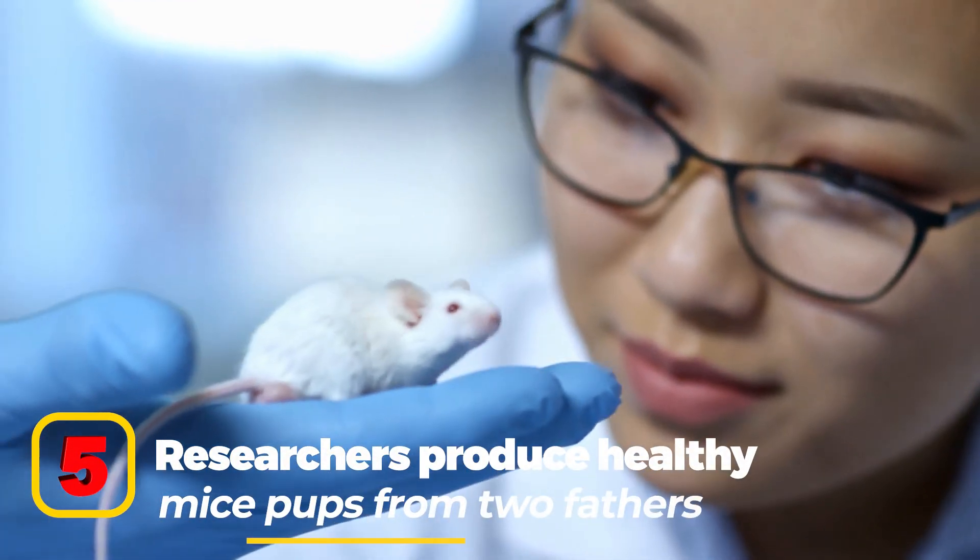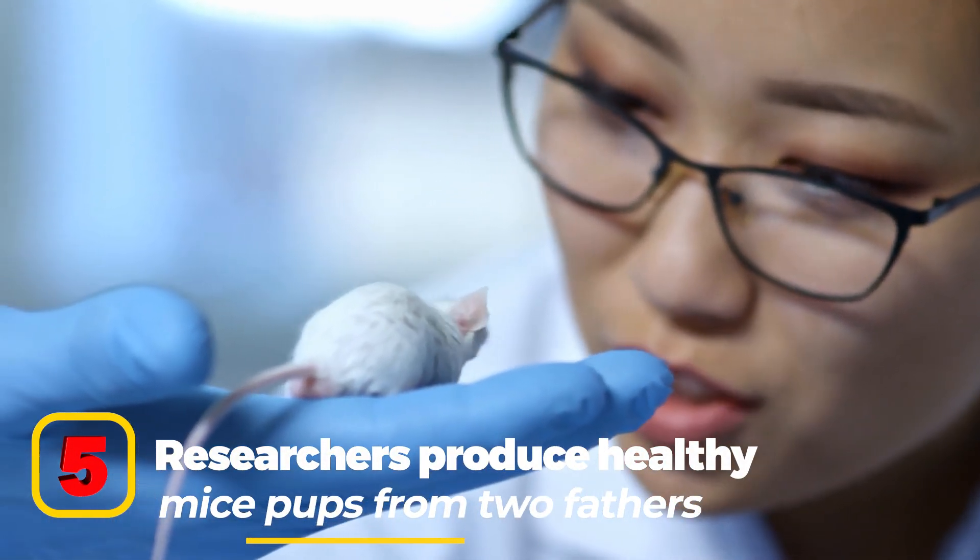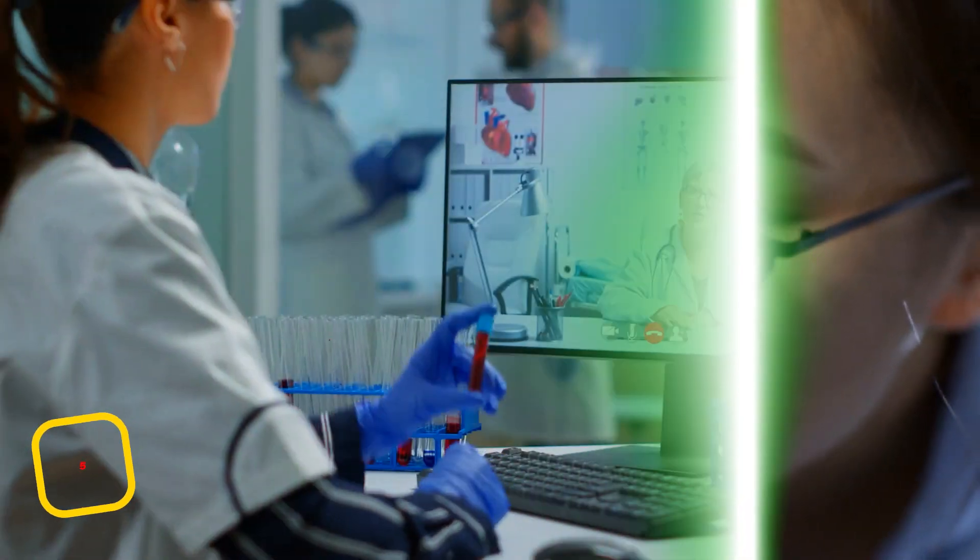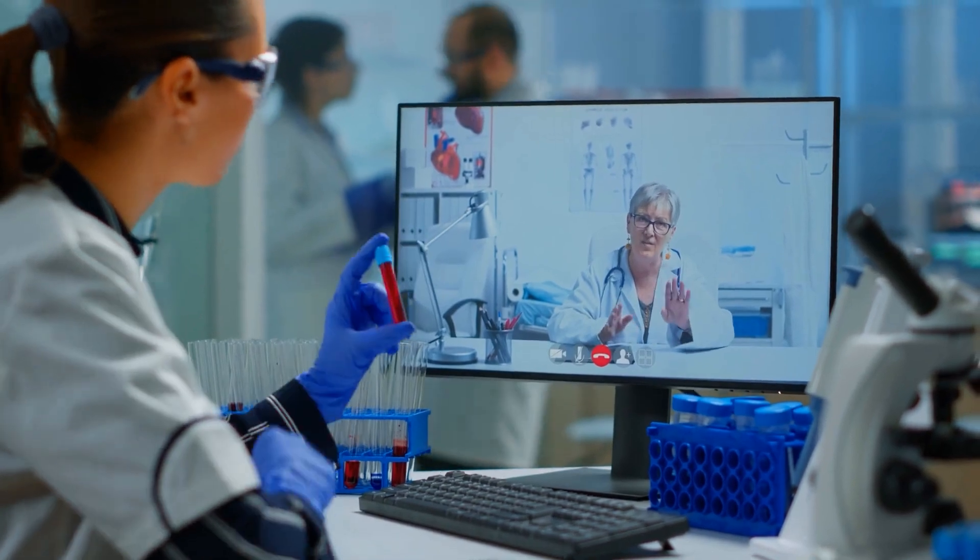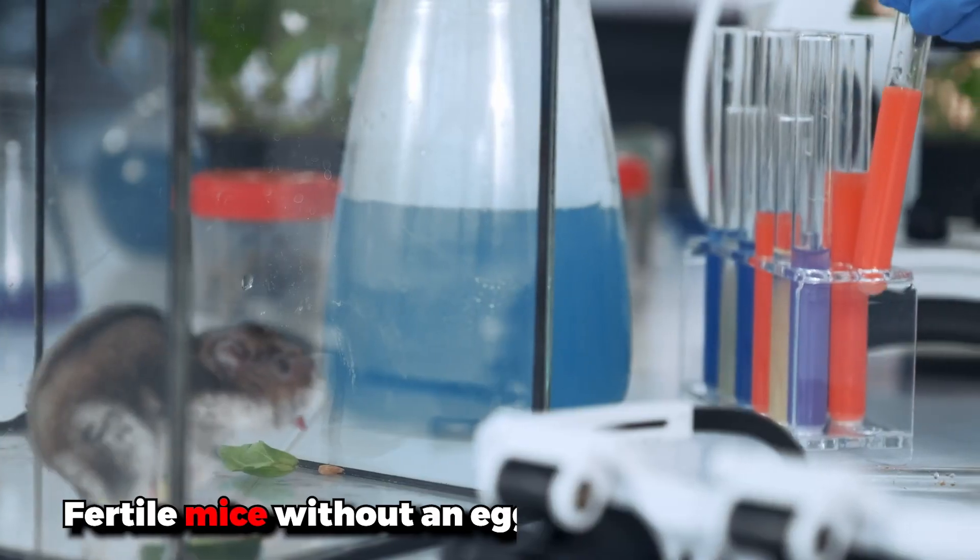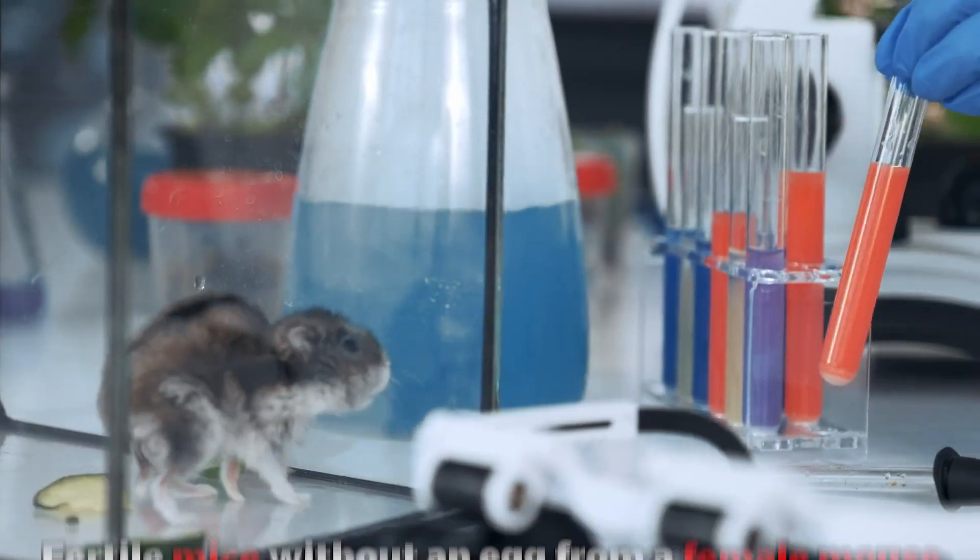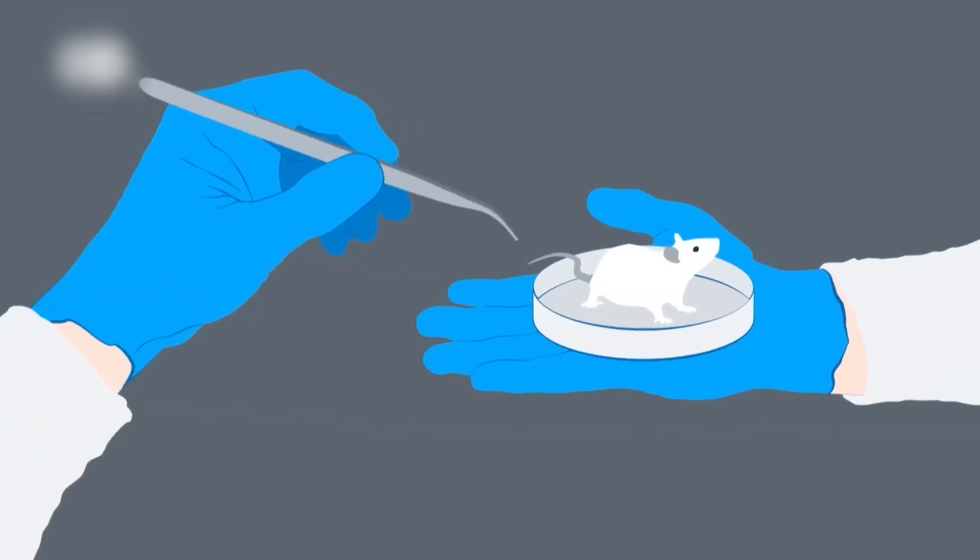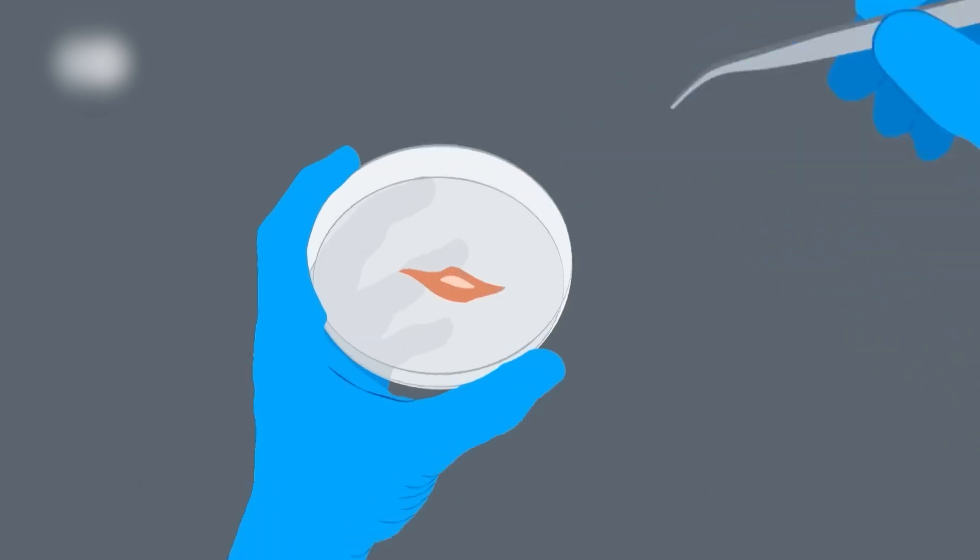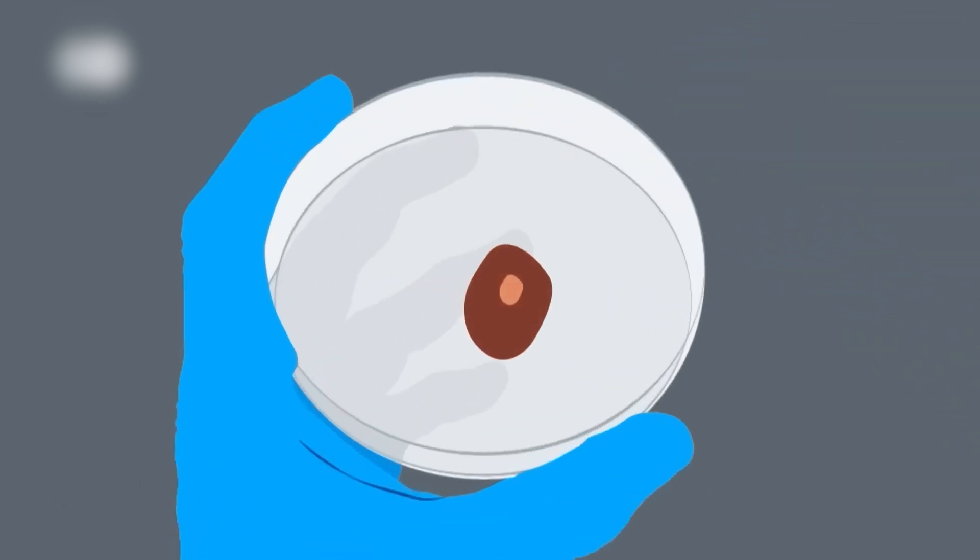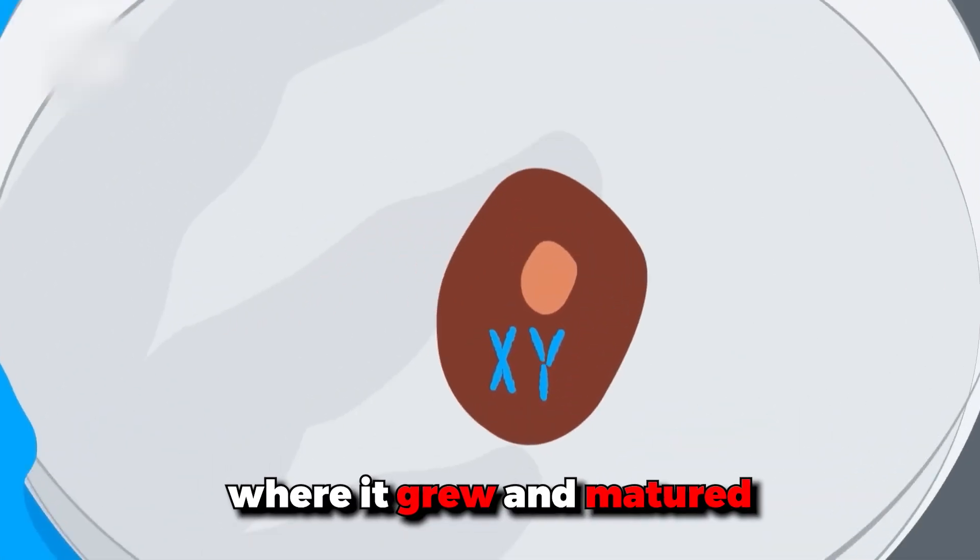Number 5: Researchers produce healthy mice pups from two fathers. Yes, you read that right. Researchers from Japan presented evidence at a scientific conference that it is possible to produce healthy, fertile mice without an egg from a female mouse. First, eggs were made from the stem cells derived from the skin cells of a male mouse. These eggs were fertilized with sperm of another male, and then the fertilized egg was transferred into a female mouse where it grew and matured.